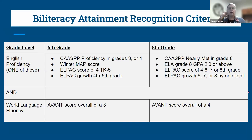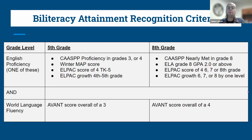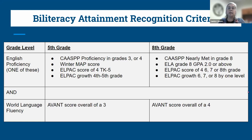To receive the Bi-Literacy Attainment Recognition in fifth grade, students must provide evidence of proficiency in English in one of the following ways: CASP/SBAC proficiency in grades 3 or 4, a winter MAP score at grade-level proficiency, an ELPAC score of 4 at any time between TK and grade 5, or ELPAC growth between 4th and 5th grade. Meeting any one of those criteria satisfies the English proficiency requirement.